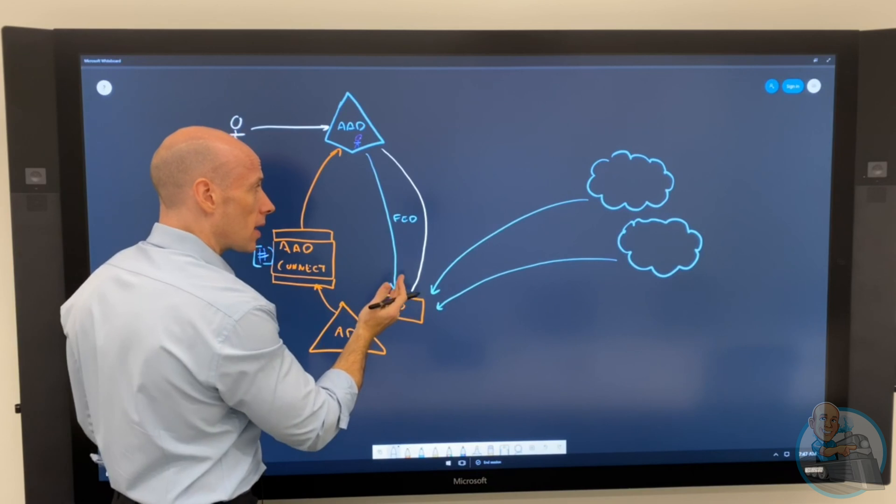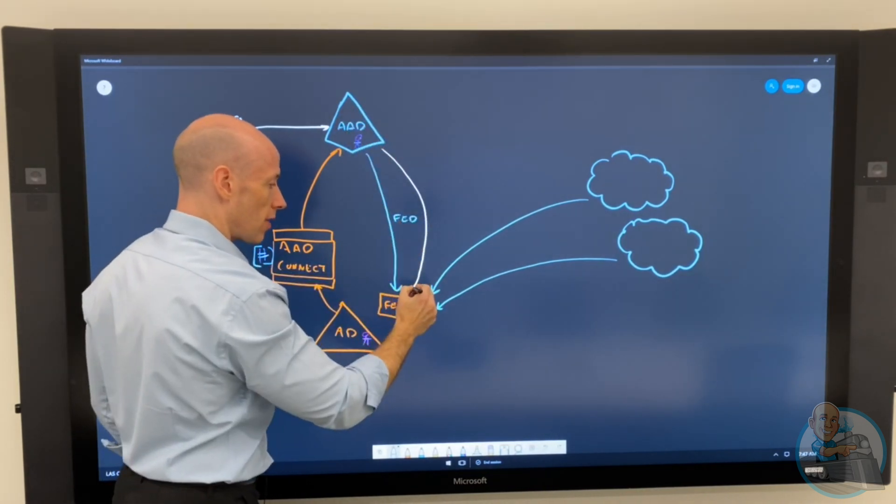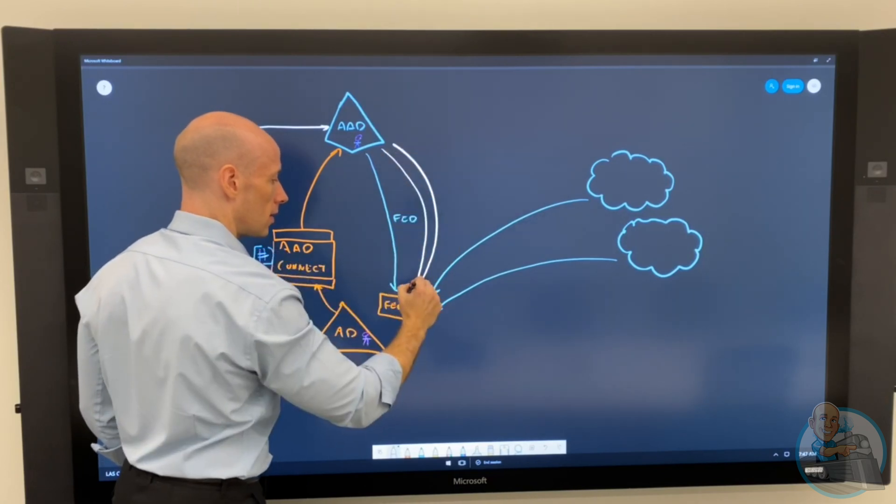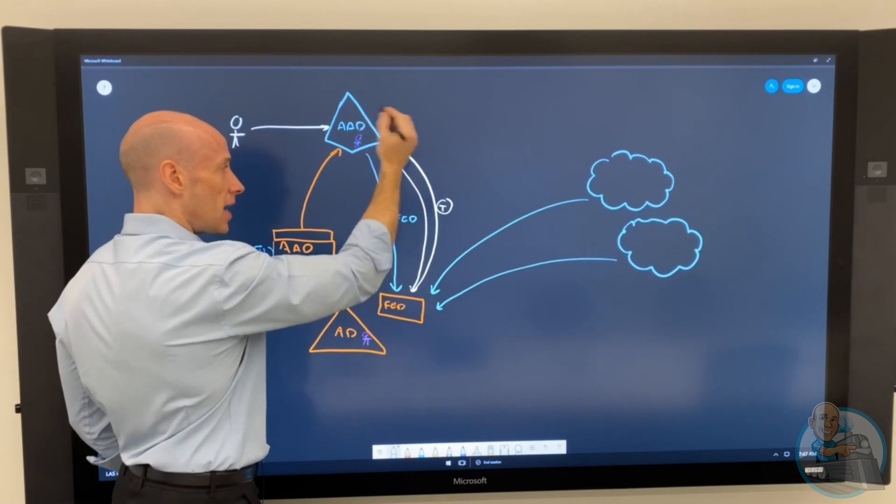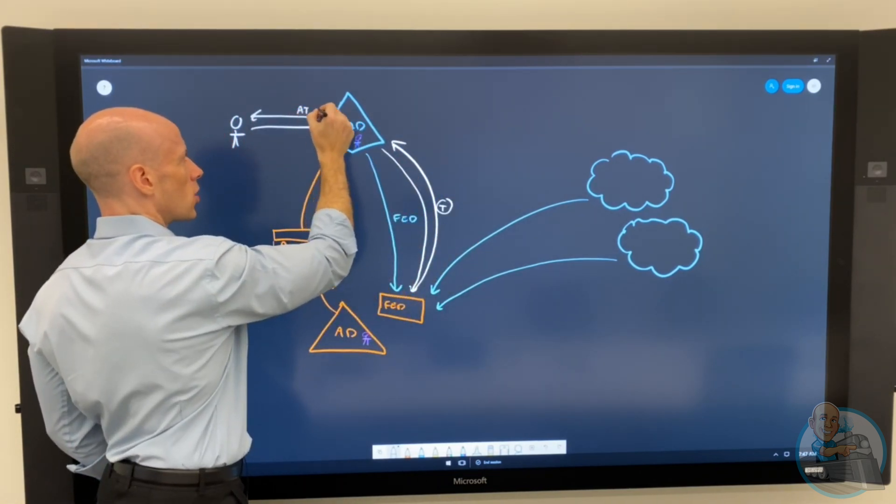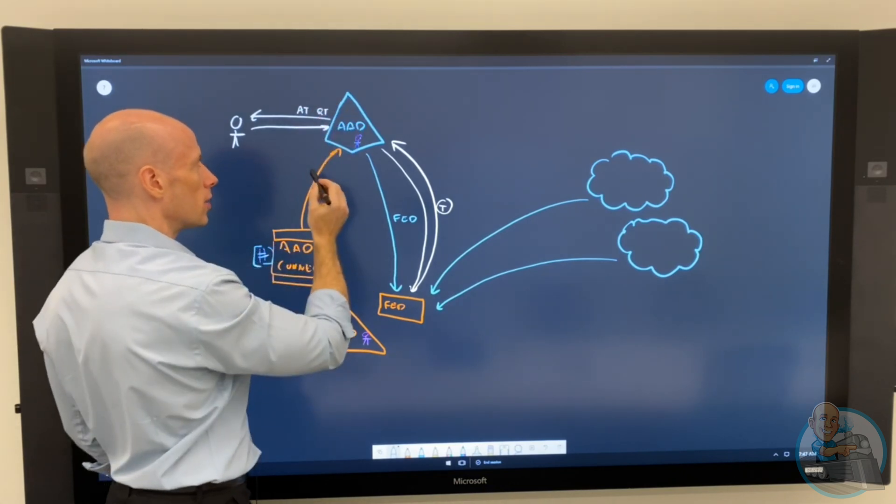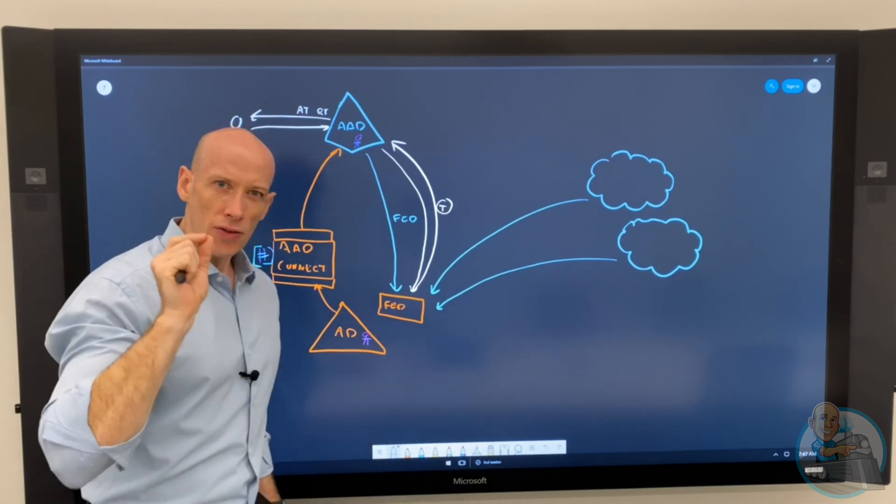It will then bounce me to the federation server, which will perform the authentication. And at that point, I'll get kind of a token that I can present back to Azure Active Directory. So I'll have some kind of token. Then Azure AD will then actually go ahead and create me my access token and my refresh token. That access token I can then go and use for the service.